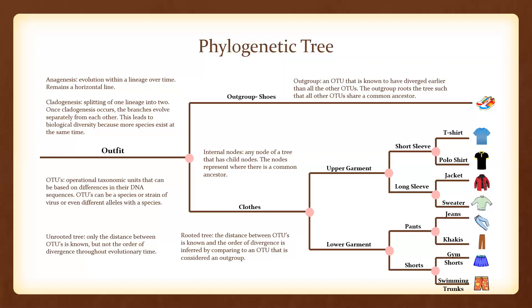In an unrooted tree, only the distance between OTUs is known, but not the order of divergence throughout evolutionary time. In a rooted tree, the distance between OTUs is known and the order of divergence is inferred by comparing to an OTU that is considered an outgroup. We clearly have a rooted tree due to the presence of our outgroup, shoes. An outgroup is an OTU that is known to have diverged earlier than all the other OTUs, and it roots the tree such that all other OTUs share a common ancestor.